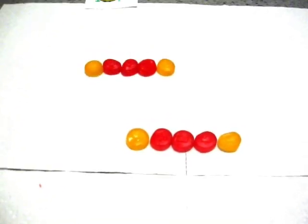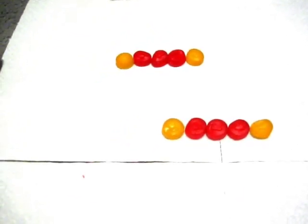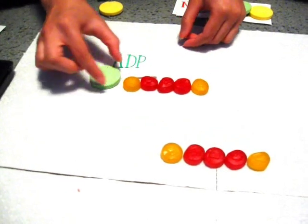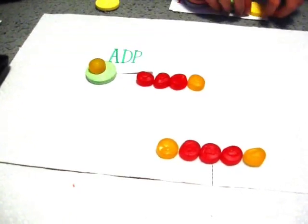Two ADPs come in to take away phosphate. Because ADP receives another phosphate, it turns into ATP. This process of making ATP is called substrate-level phosphorylation.